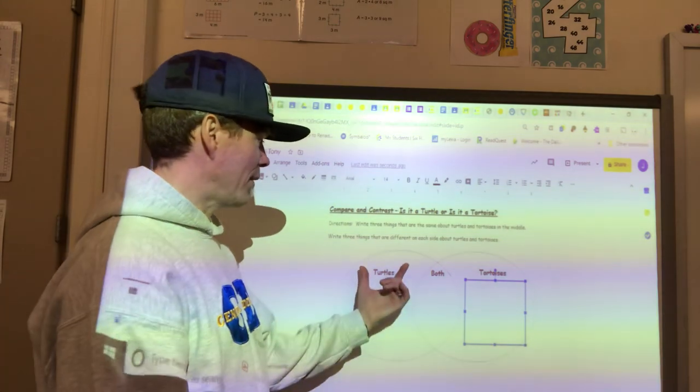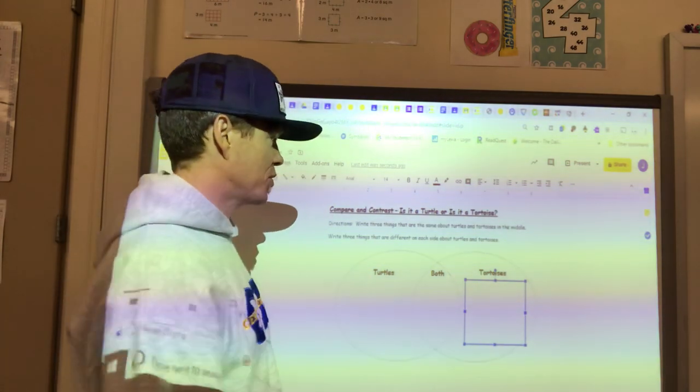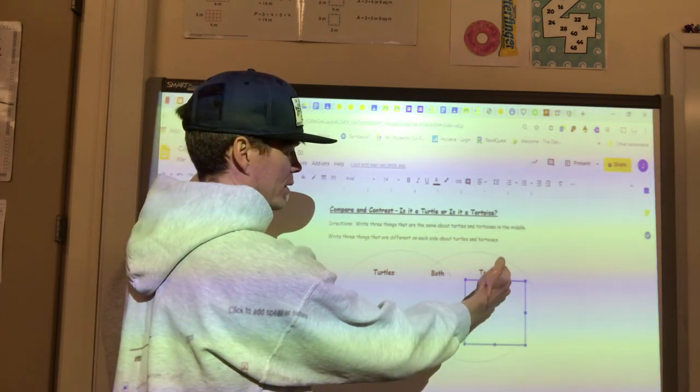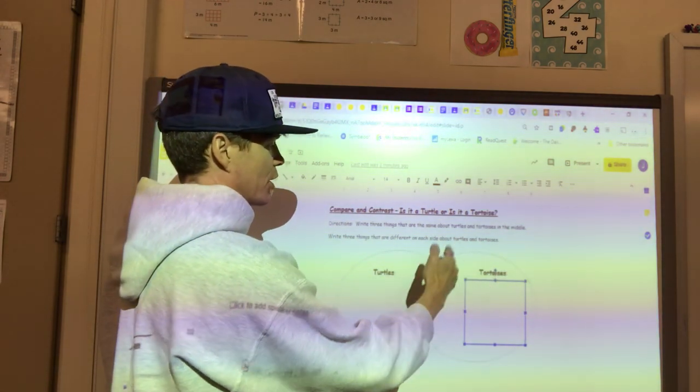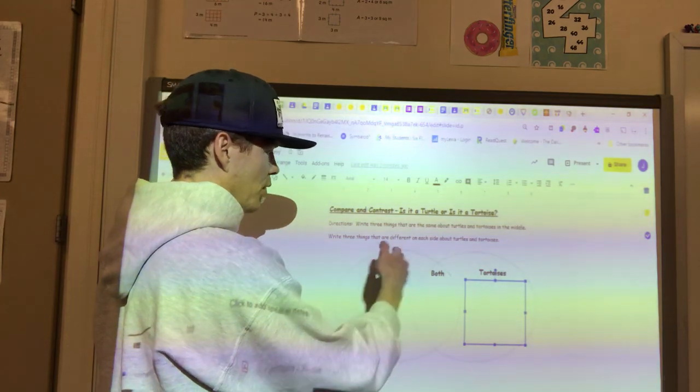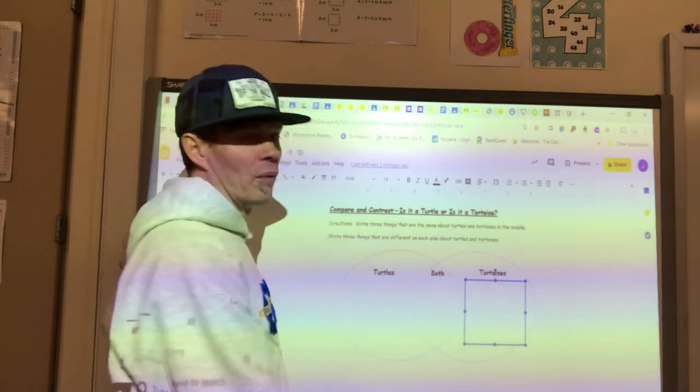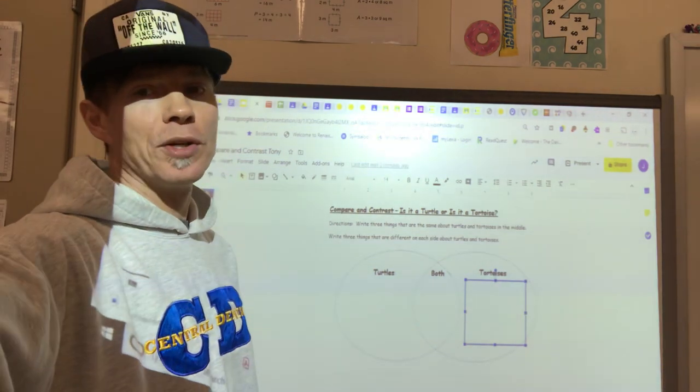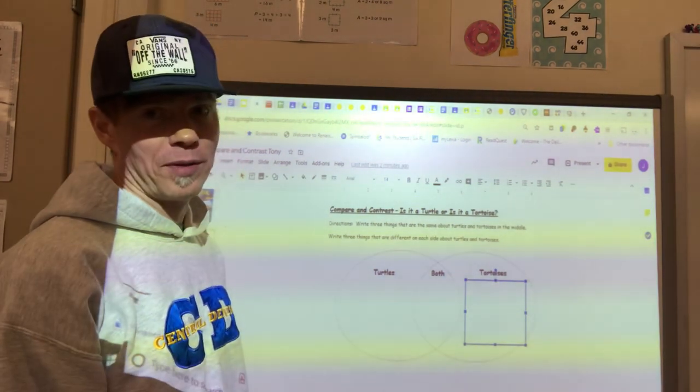Now when you have the three different text boxes filled out because it says to write three things that are different on each side, so what's different, and things that are the same in the middle, so three, three, and three. When you finish and you have a total of nine different things, then what you are going to do is you're going to share this with me.